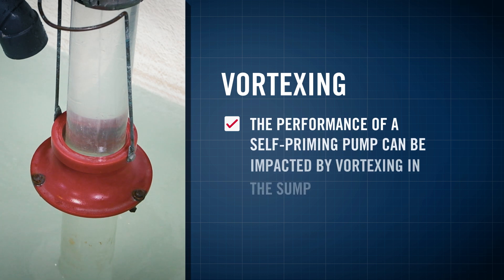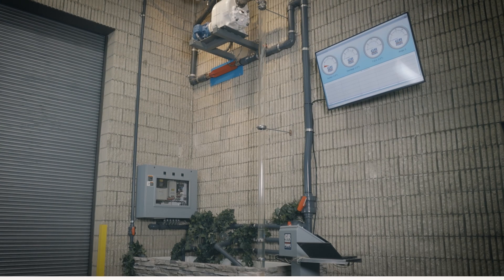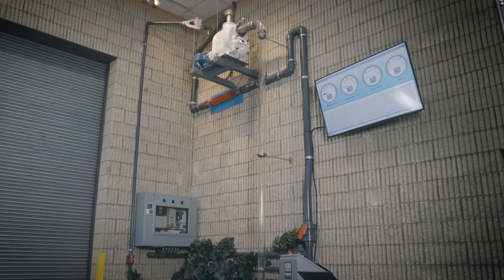The performance of a self-priming pump can be impacted by vortexing in the sump. Using Gorman-Rupp's priming tower, this can easily be demonstrated.